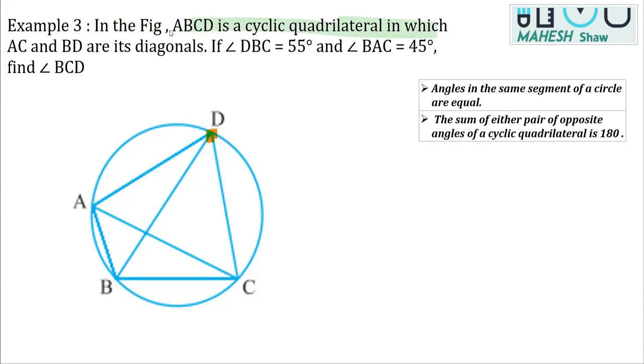And further, it says that AC and BD are its diagonals. Clearly, AC and BD are the diagonals. And further, it also mentions the value of some angle that is angle DBC. This is angle DBC, this angle. This angle is given as 55 degrees. We know the value of this as 55 degrees.